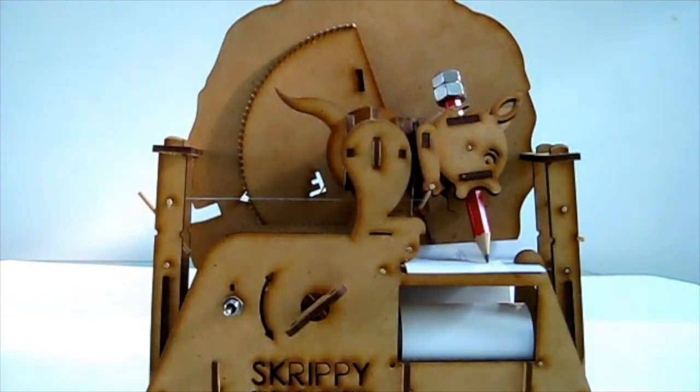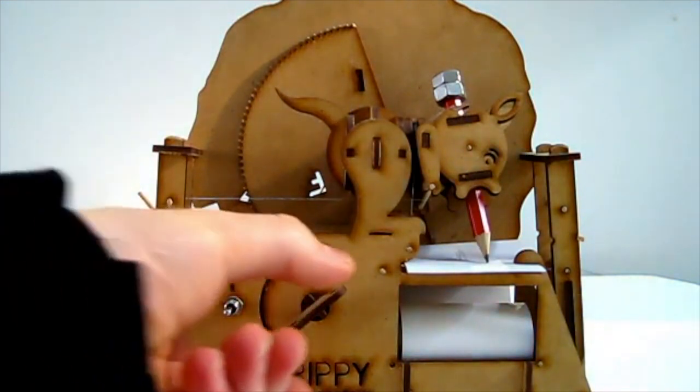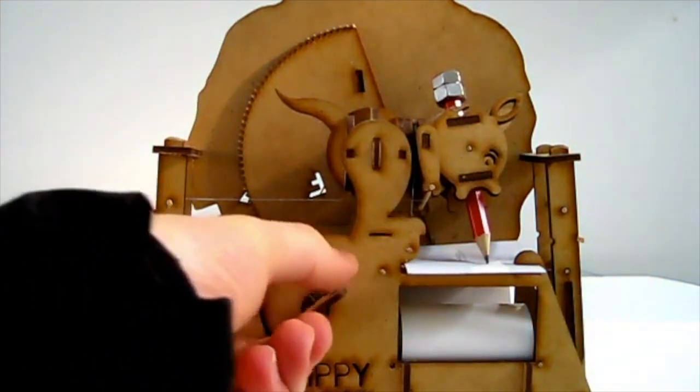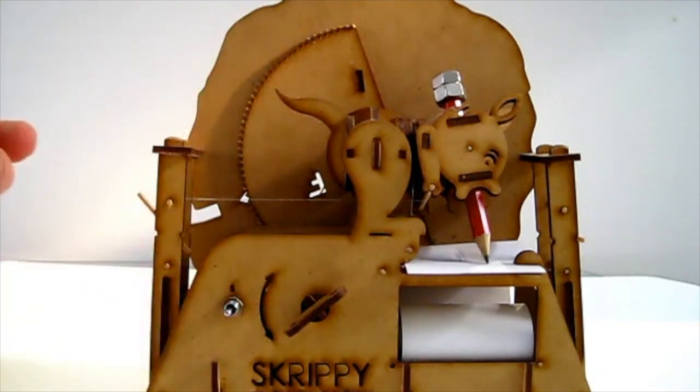And of course we also need a way to make Skrippy move. So you can either move him by turning this handle or in this case there's actually an electric motor and a battery. But that doesn't come with the kit.